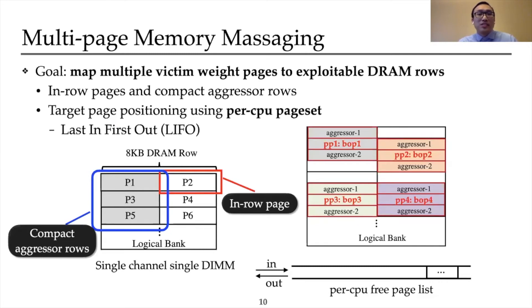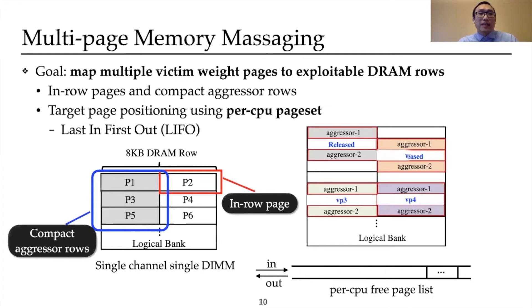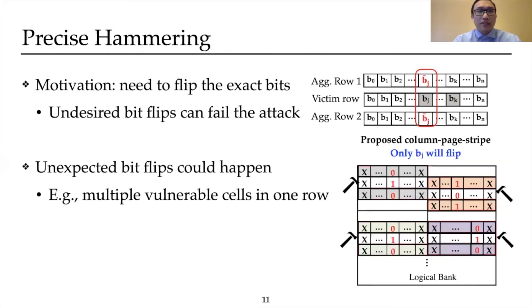The next step is to position the targeted weight pages to the designated physical locations. We propose a fast page positioning technique by utilizing the precipitant free page list. The precipitant page set is a data structure that stores recently released page frames in last-in, first-out fashion. To exploit this structure, the attacker first releases the targeted physical pages in one order, pushing those page frames to the page set. The attacker then maps the victim weight pages in reverse order through memory map interfaces, successfully locating the targeted victim pages to the planned locations.